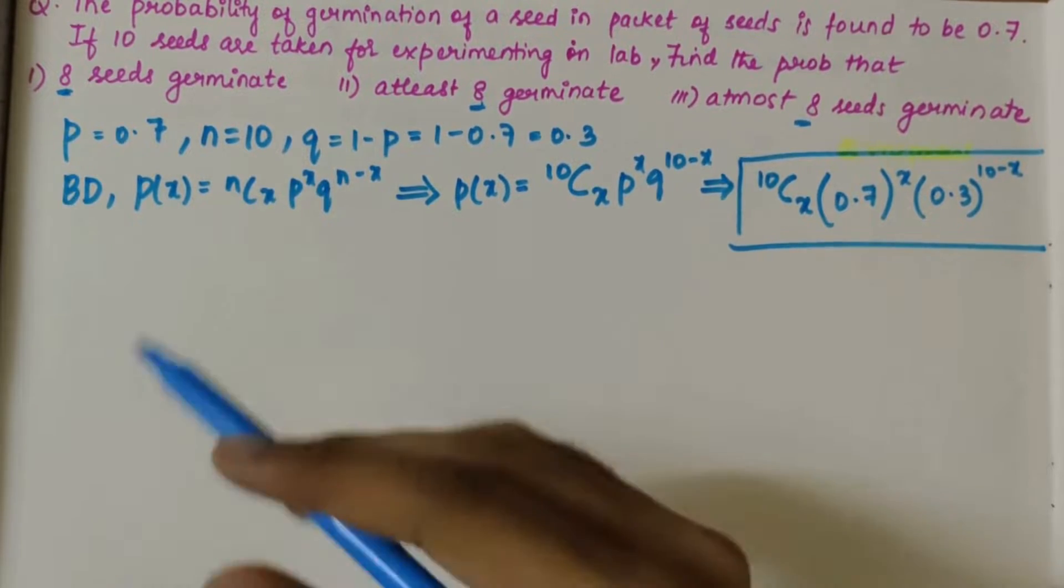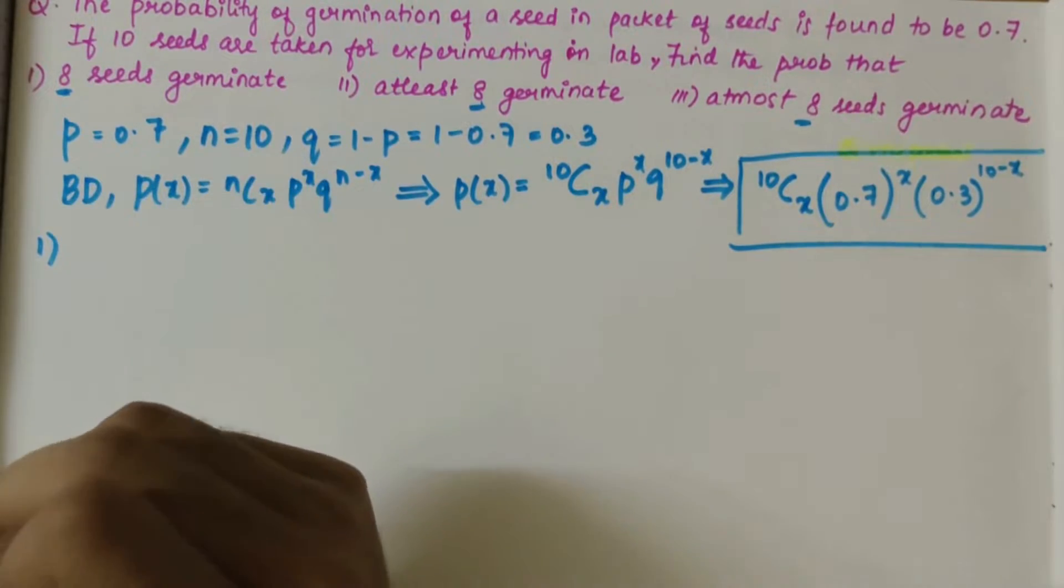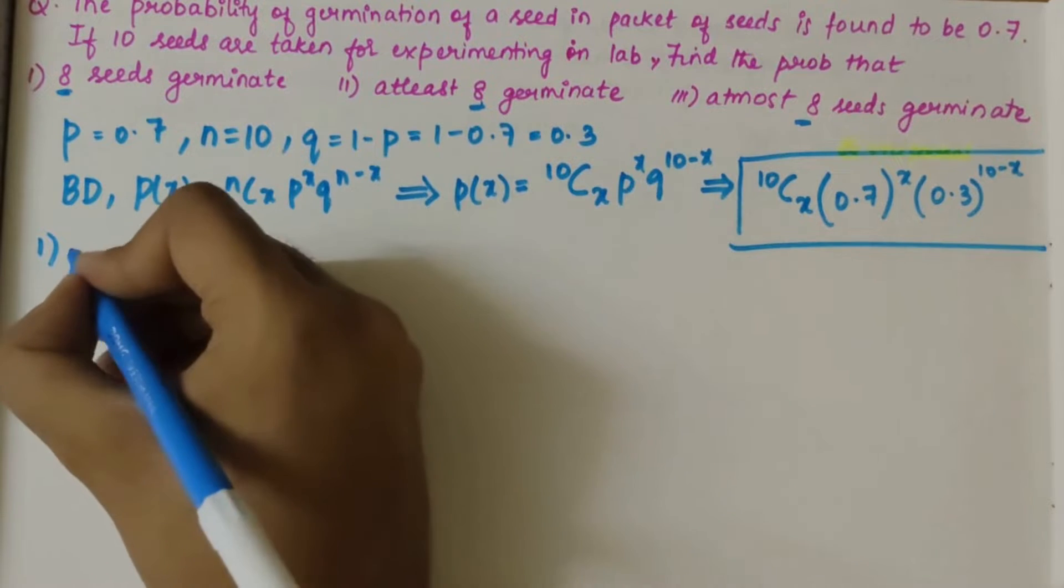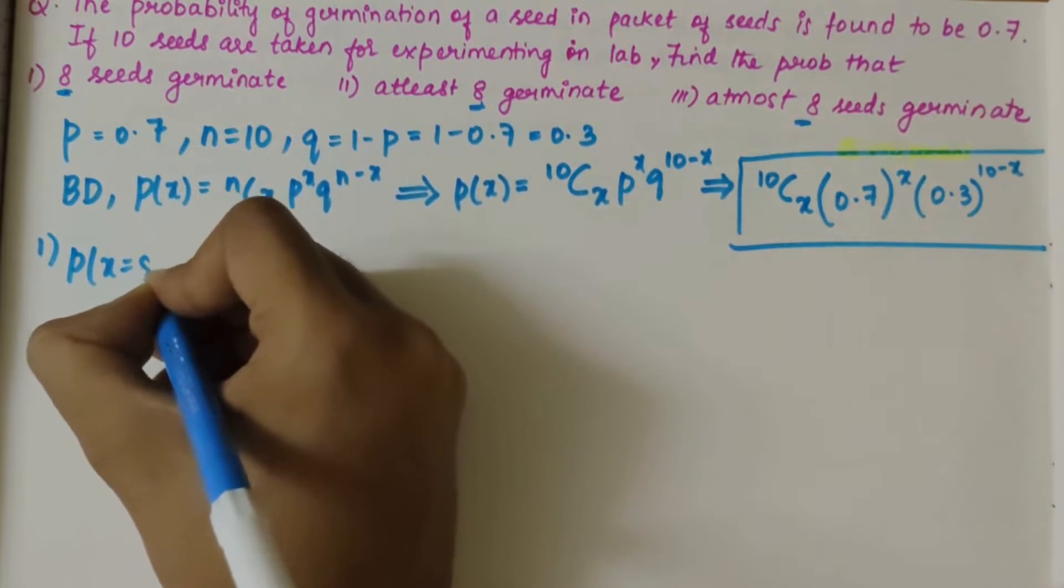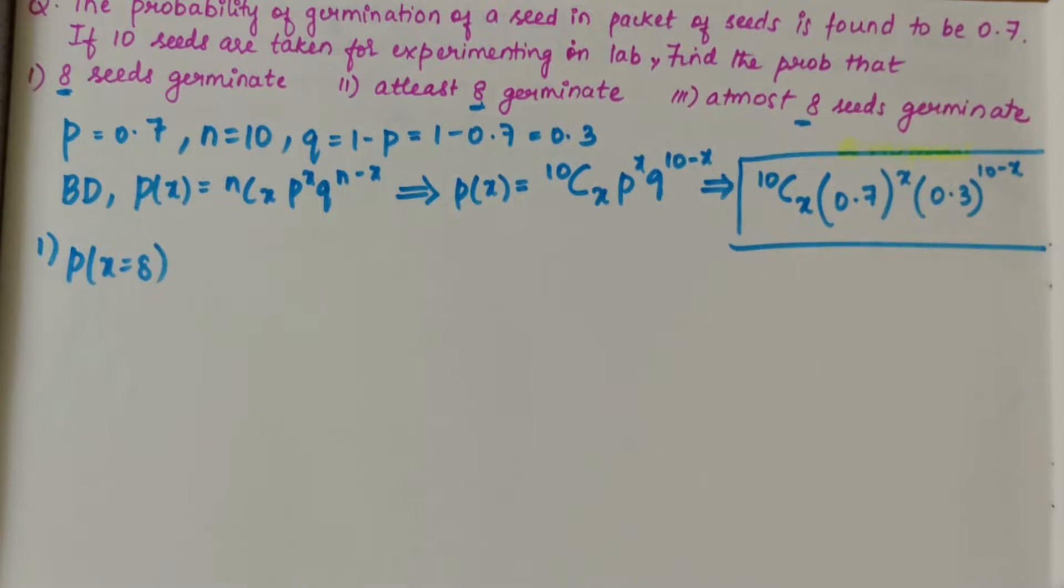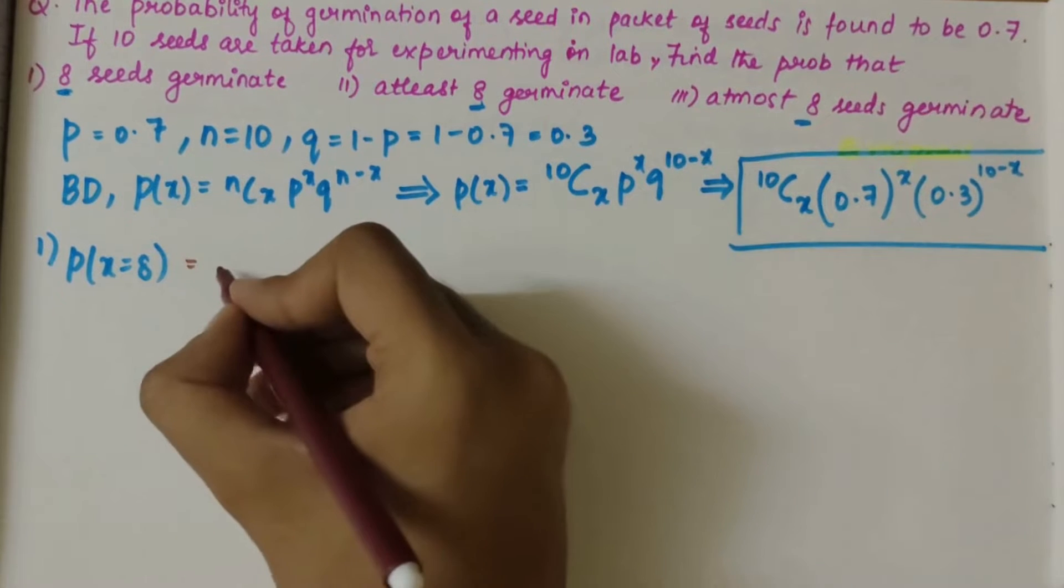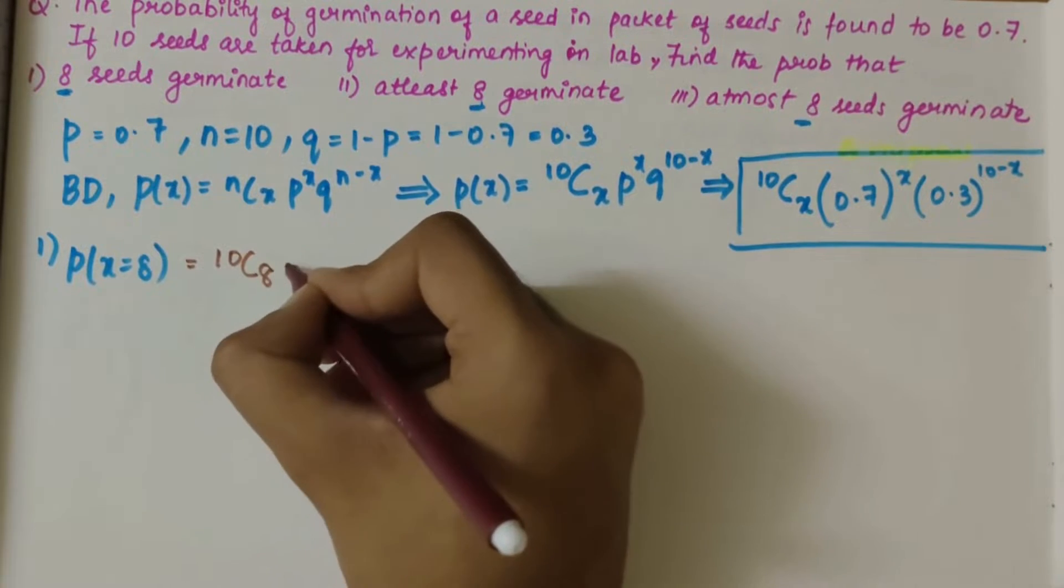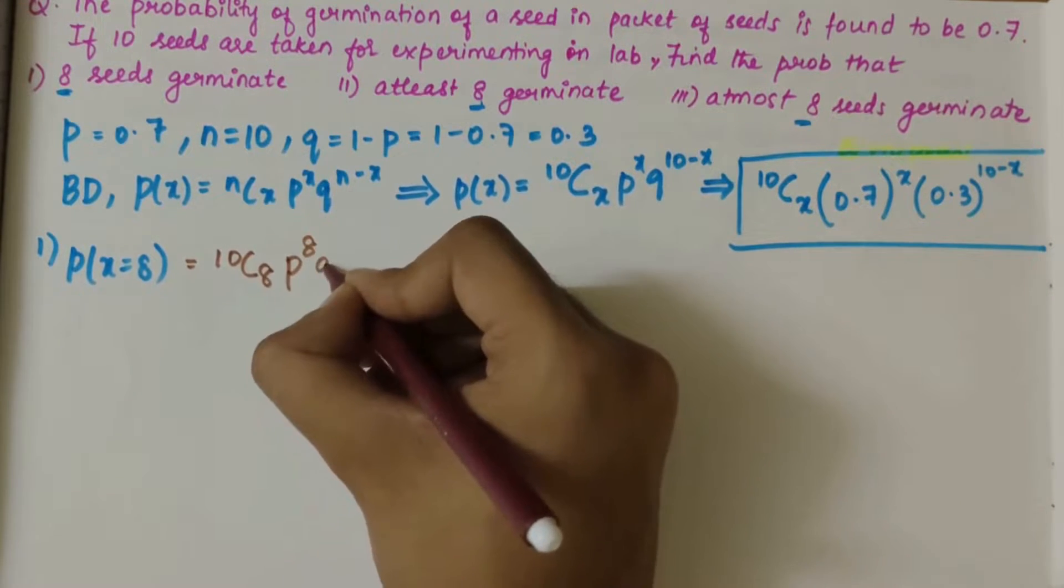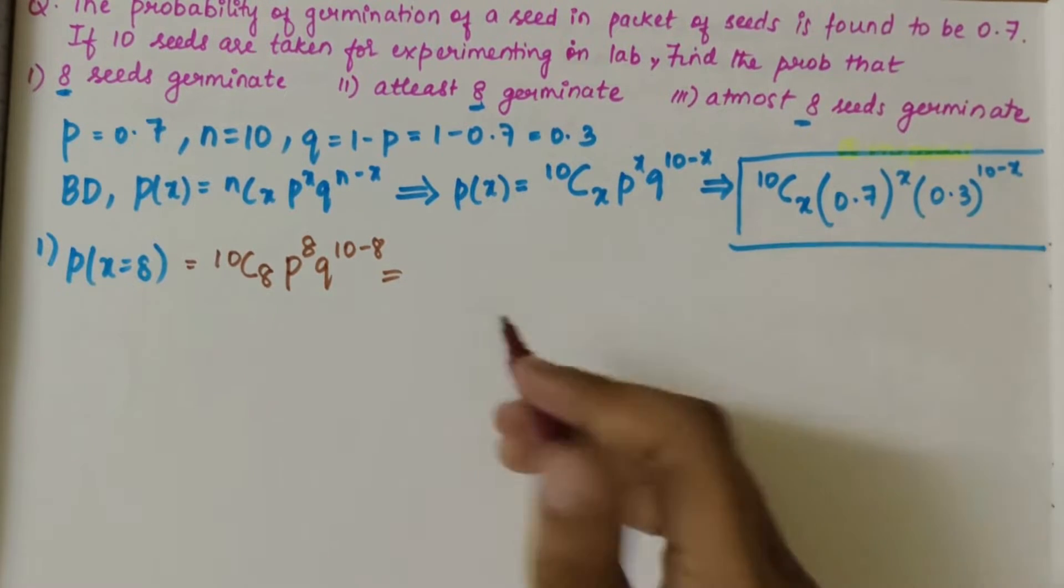Now let's start with the sub-part. First part says probability of exactly 8 seeds germinate, so p(x = 8). If x value is 8, we can write the equation as 10C8, p^8, and q^(10-8). Put 8 in this equation.